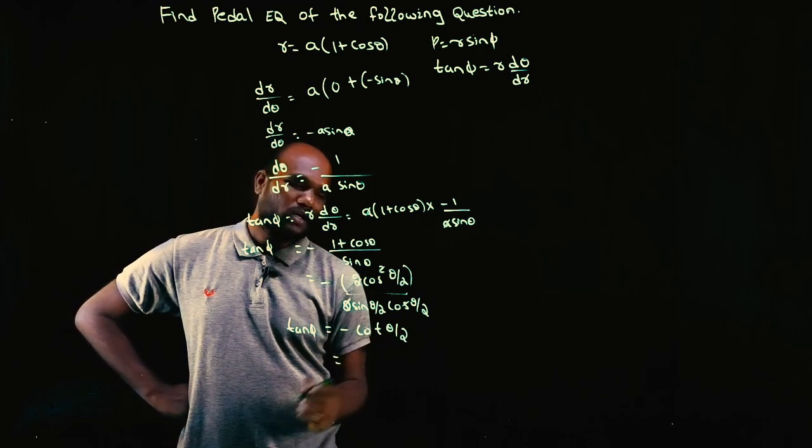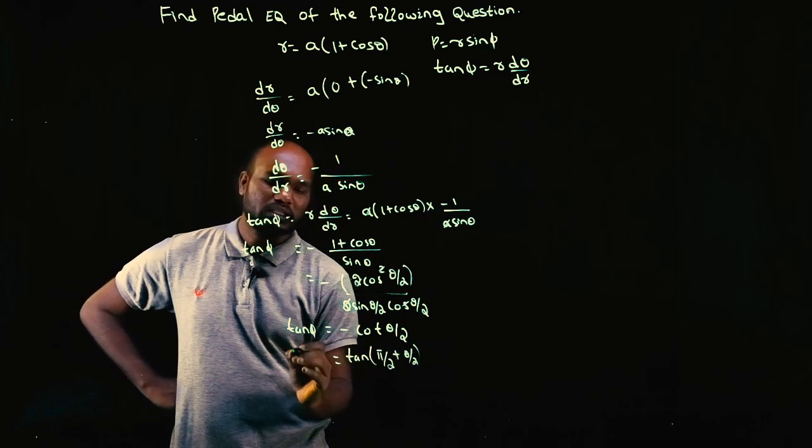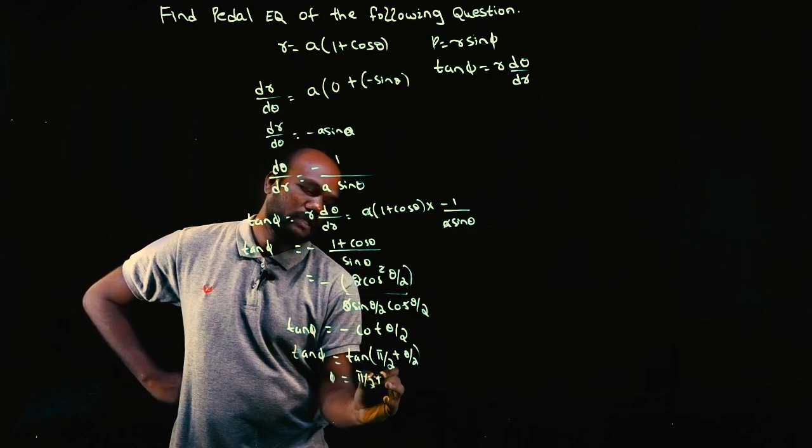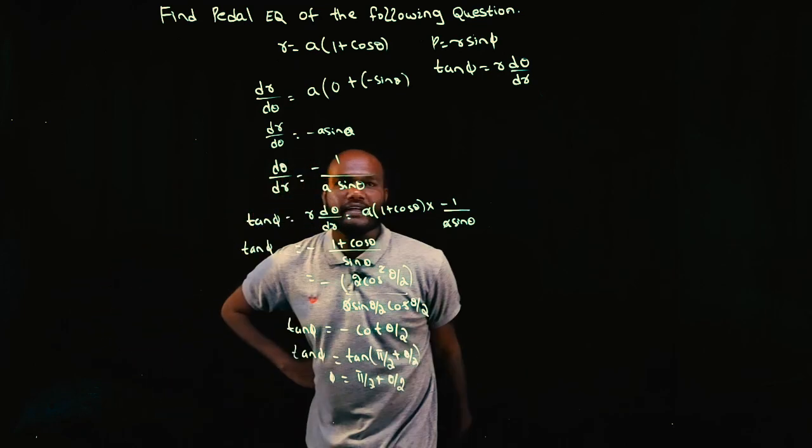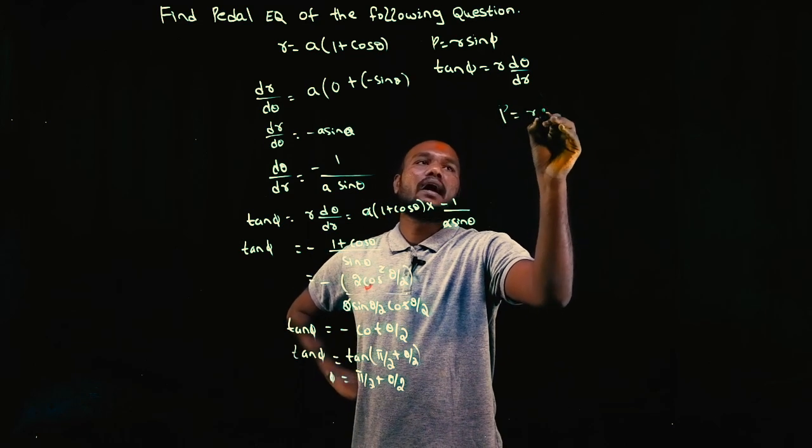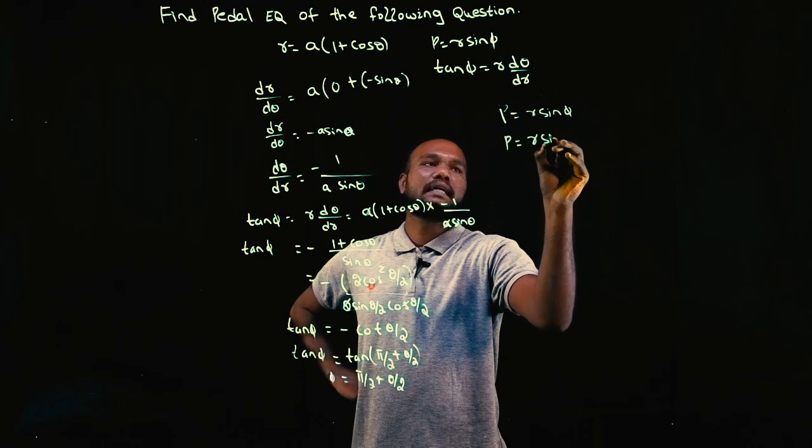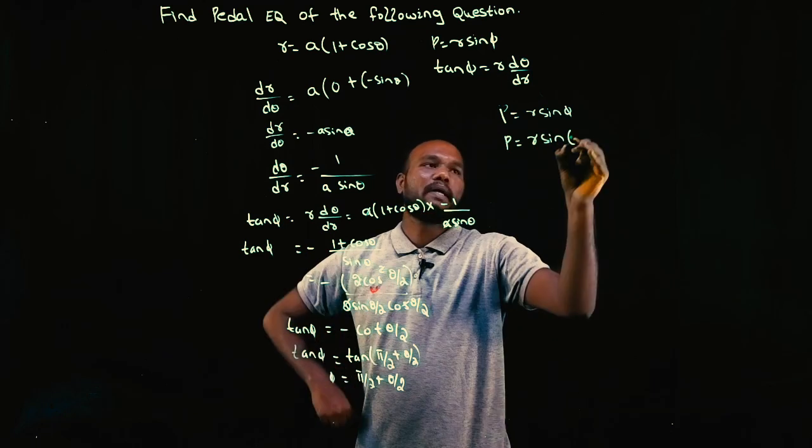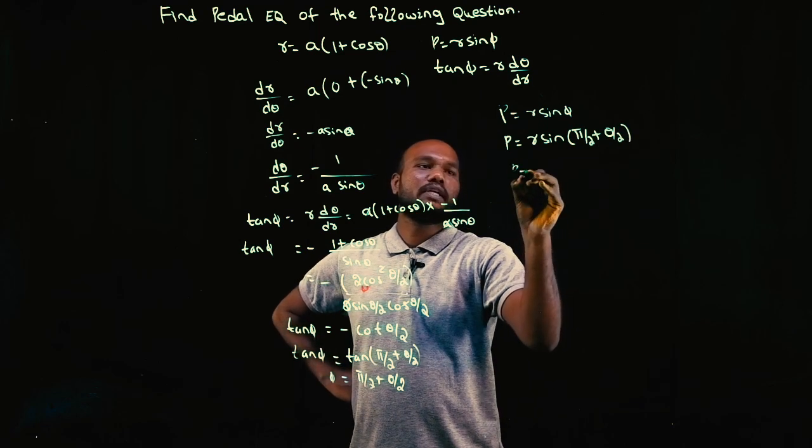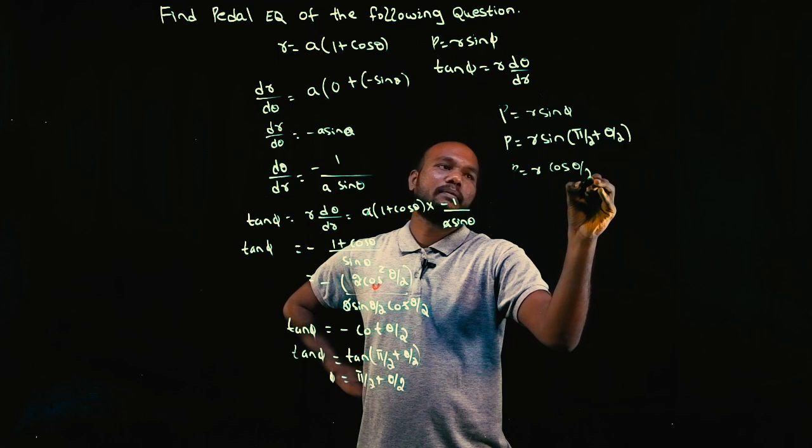So phi value is pi by 2 plus theta by 2. Phi value is done. So now P is equal to R sine phi. P is equal to R sine of pi by 2 plus theta by 2, which is cos theta by 2.